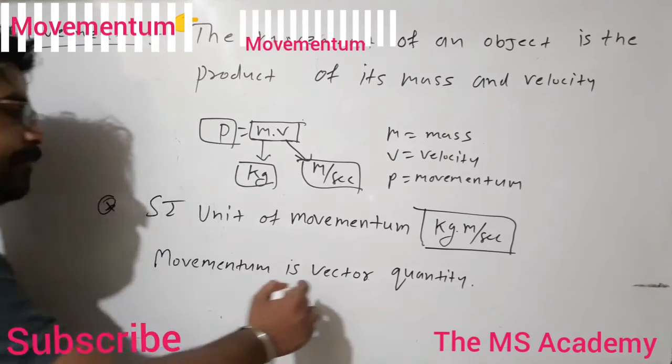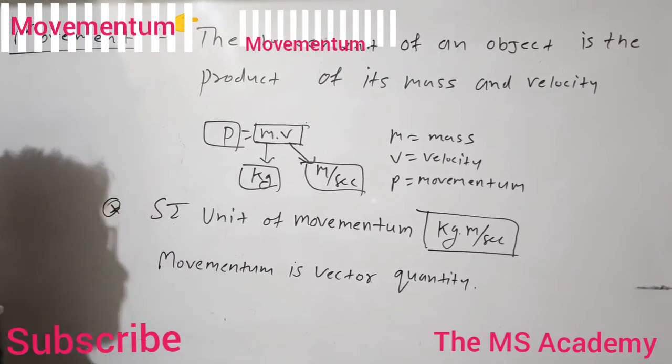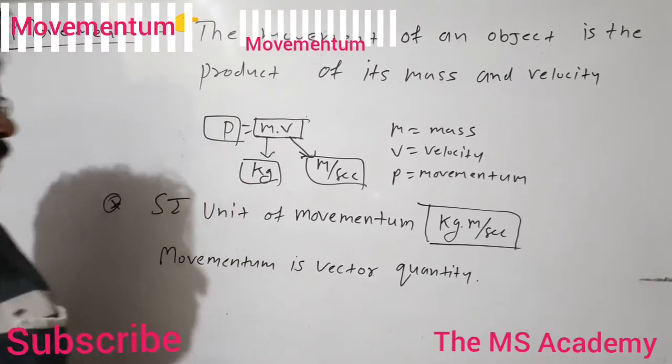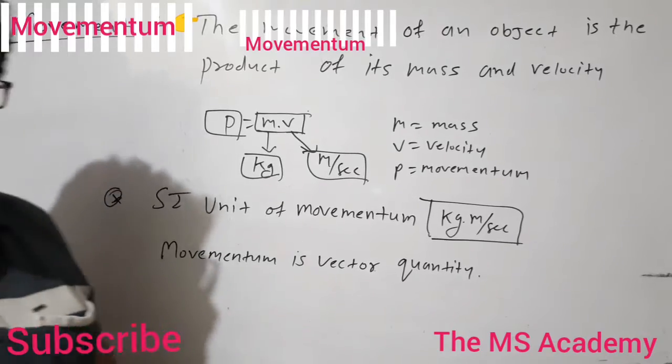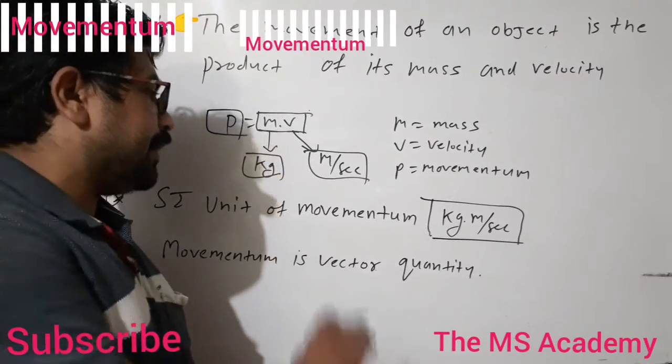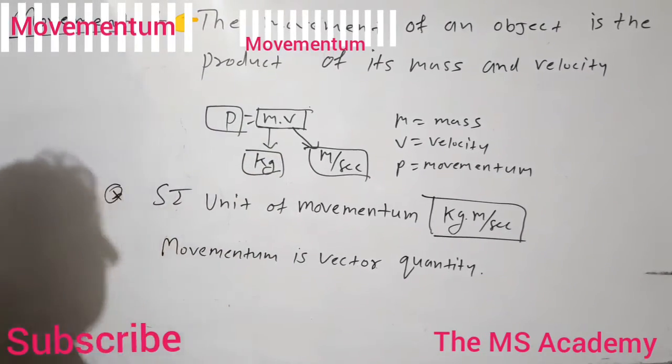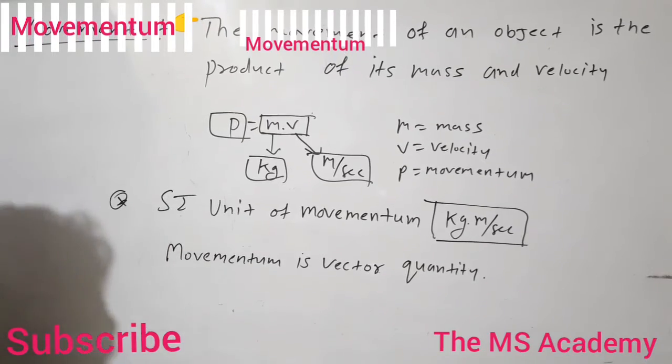Momentum is a vector quantity. In vector quantities, we need magnitude with direction. So momentum is a vector quantity.